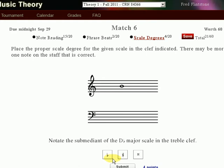The sub-median of the D flat major scale in the treble clef. So the sub-median is the sixth scale degree and that's B, but in D flat major that's B flat. Now let's say I didn't choose B flat but I choose B sharp and I click submit. It shows me the correct answer and notice there are three possible B flats in the treble clef that I could have entered and they all would have been accepted as correct.